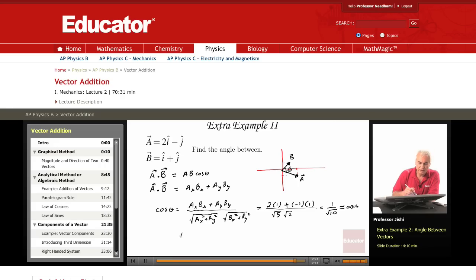So theta is cosine inverse 0.316. And that determines the angle theta. Thank you for listening.